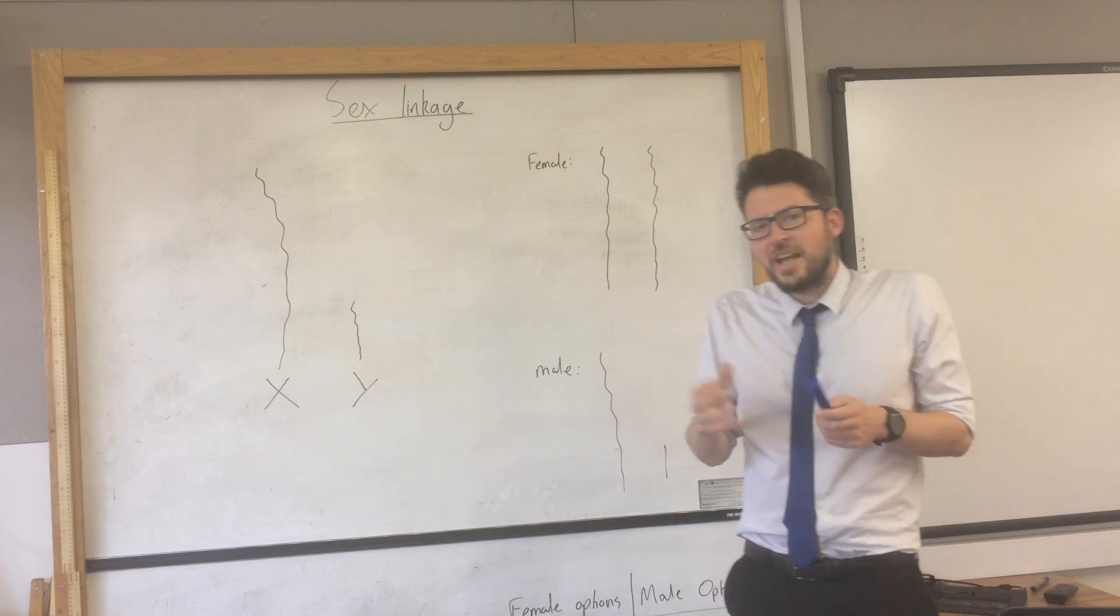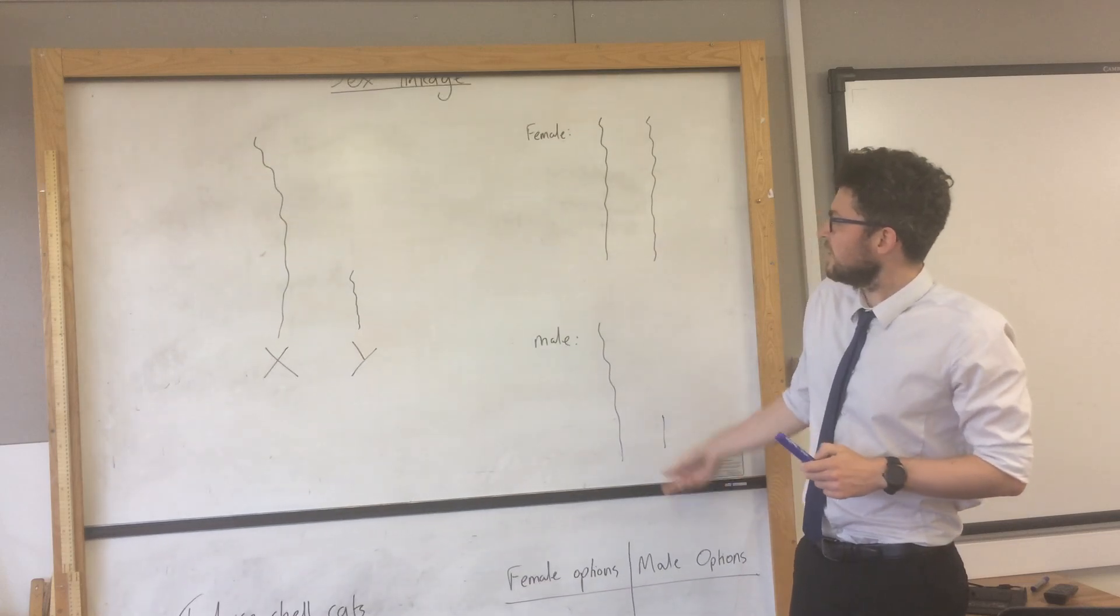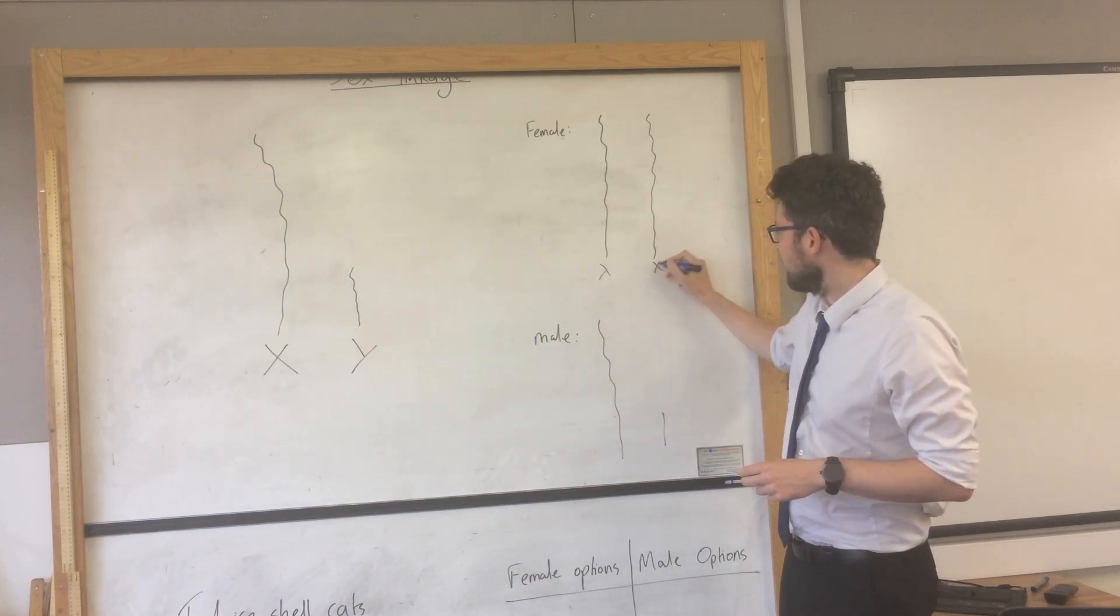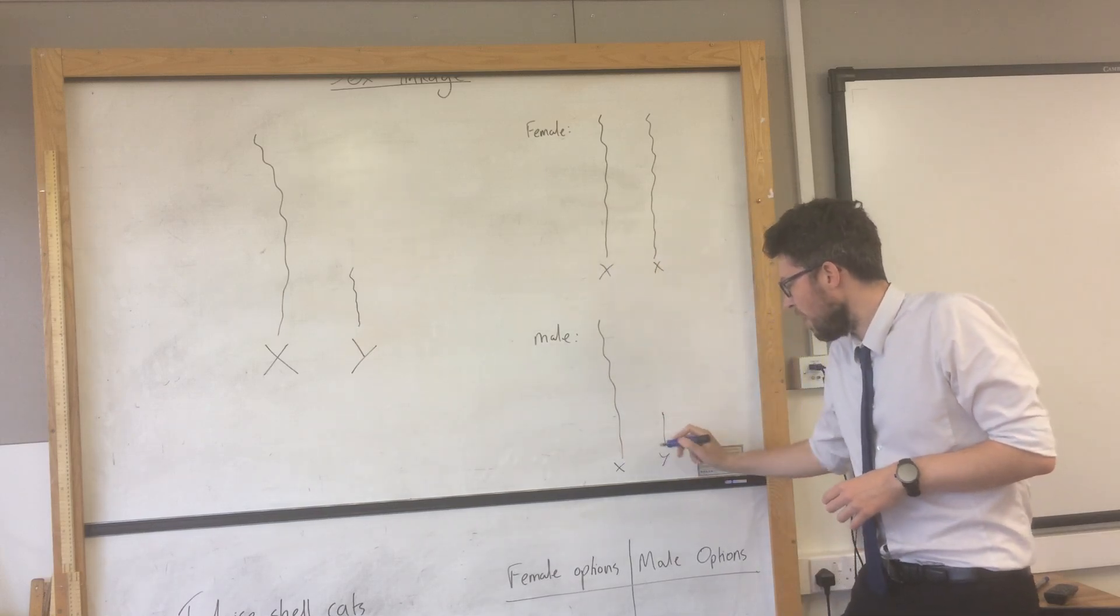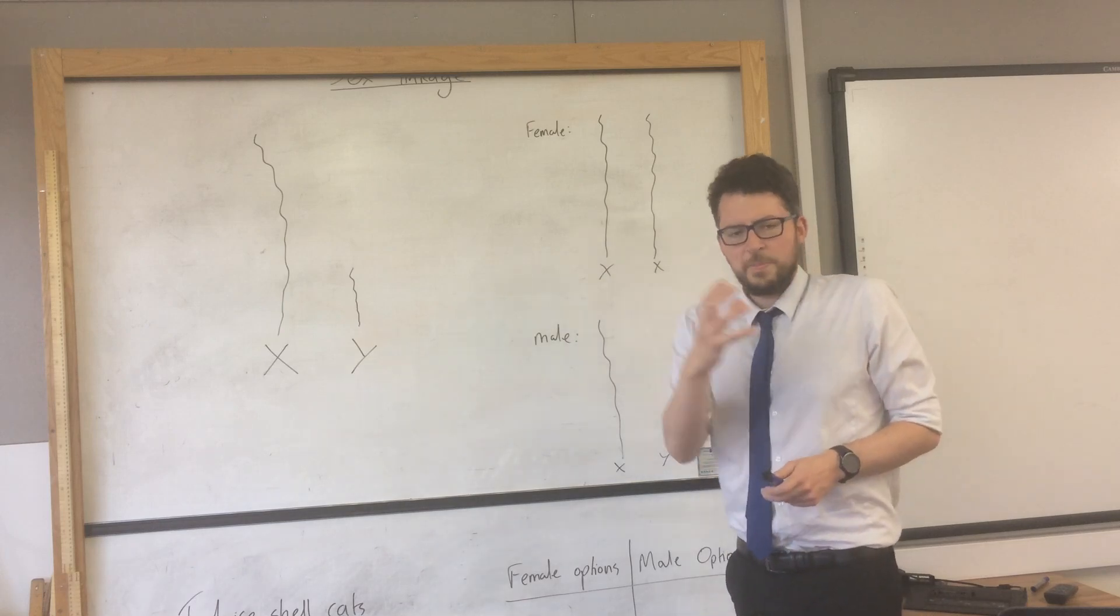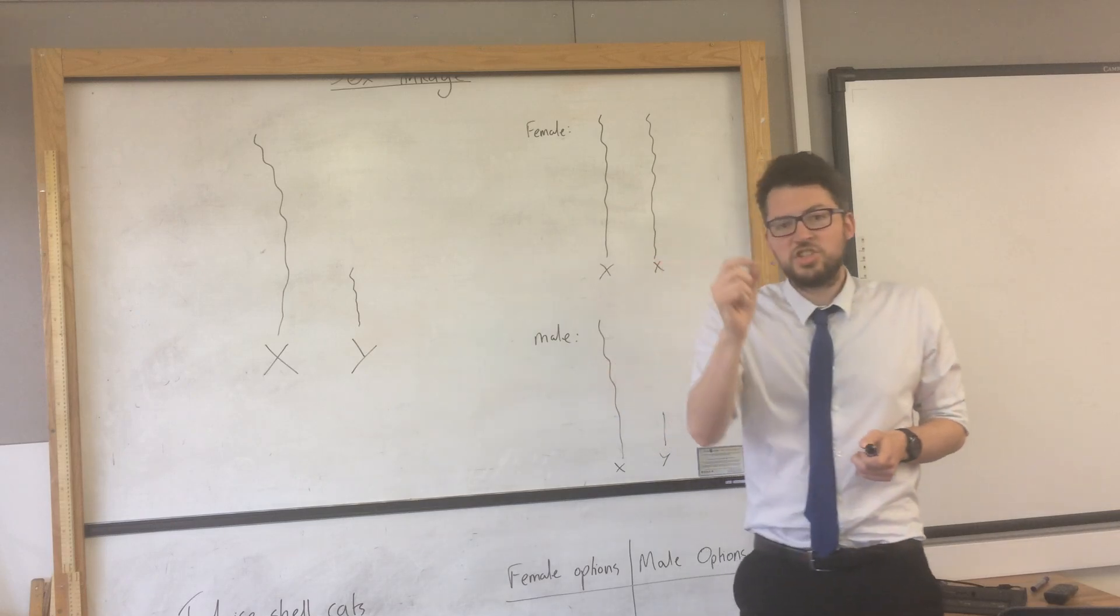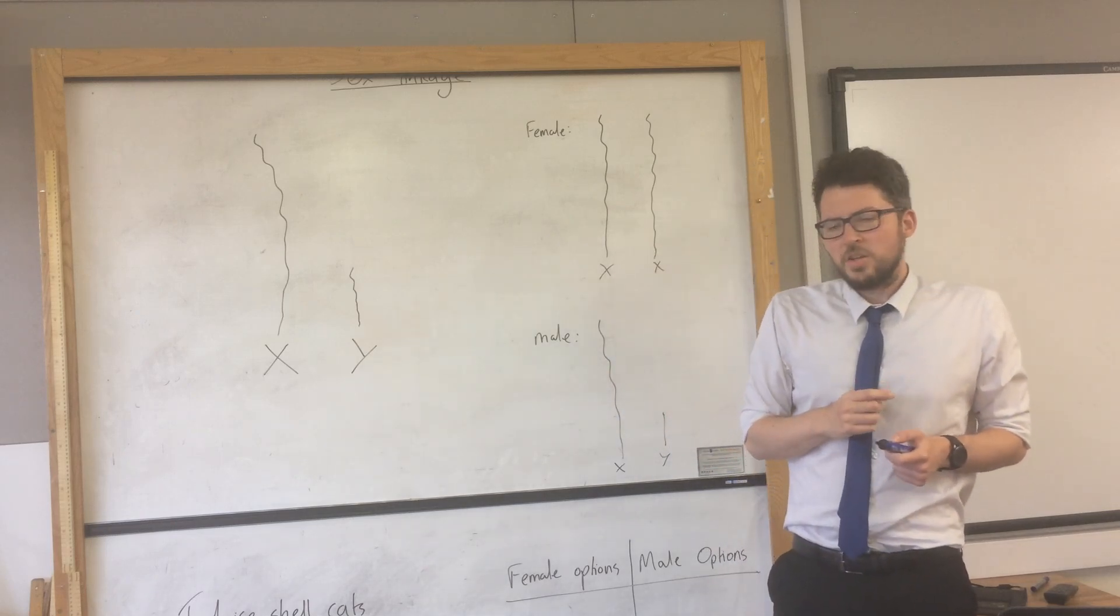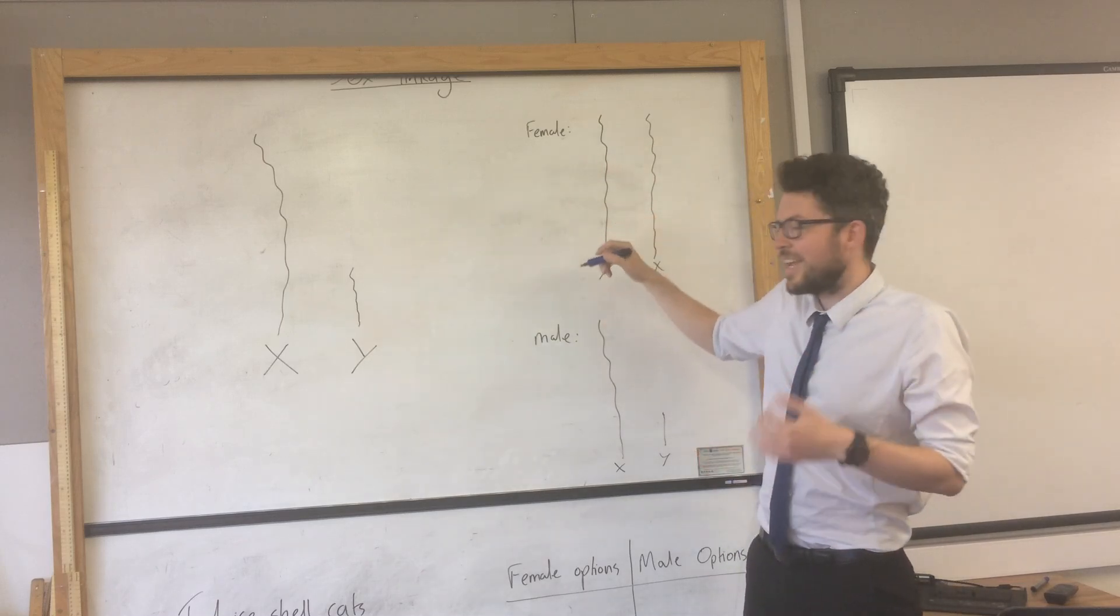We'll just take a very simple example using colour blindness. Obviously this is a female so they would be XX. This is a male, they'd be XY. So colour blindness is basically a deficiency in colour vision, and the gene for this colour vision is found on the X chromosome. If we just pick a loci and say imagine it's here.